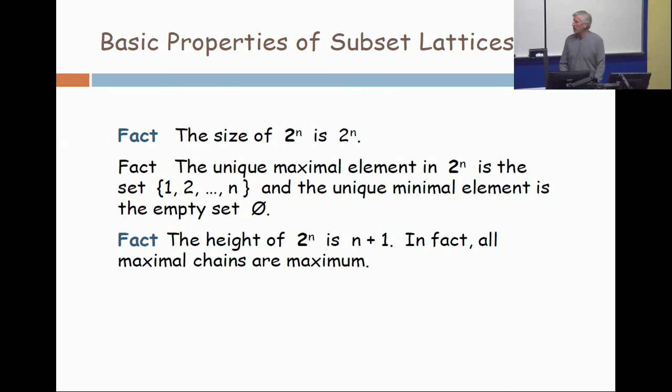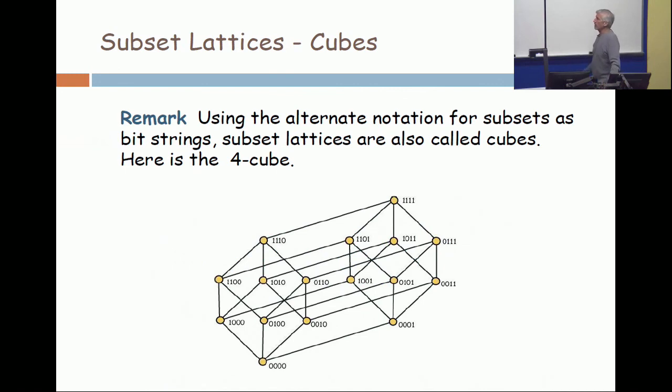The height of two to the n is n plus one. Zero, ones, twos, threes, fours, up to n. Because you have zero, then you have n plus one. And the height is not only n plus one, all maximal chains are maximum. So when we take posets in general, you can have height six, but you can have maximal chains of size one, two, three, four, five, and six. But in the subset lattice, all maximal chains are maximum. Let's go back to the picture and see that all maximal chains have an element from each of those levels. So zero, one, two, three, four. All maximal chains have size five. It's a very special property for a poset.